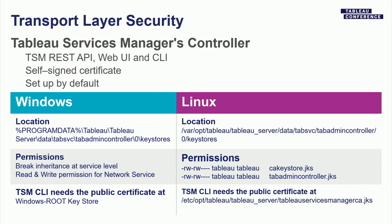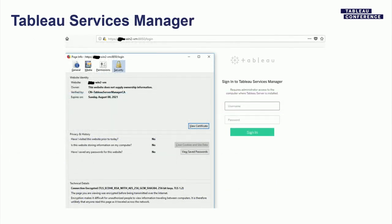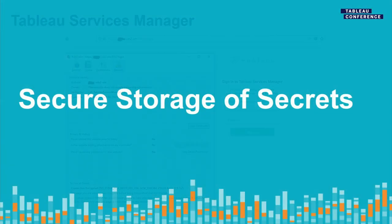The controller SSL certificate's private key is stored in the data directory of the controller. This data is locked down by file system permissions. If you modify the permissions on your data directory, you risk leaking your administrative data — someone might be able to decrypt your communications and retrieve your admin password. It's really important that this data is not available to any unprivileged users. When we set up the TSM command-line client, on Windows we put the certificate in the system key store so the TSM command-line client trusts it. On Linux, we put it in a predefined location the client knows to look at.